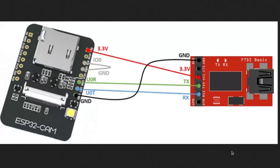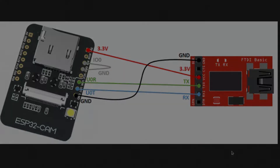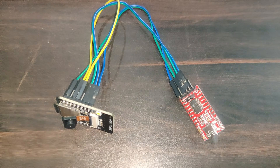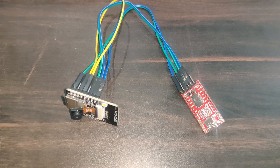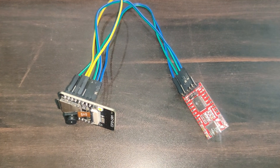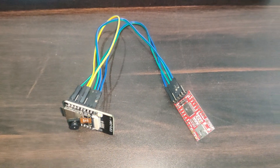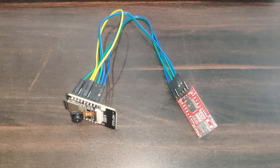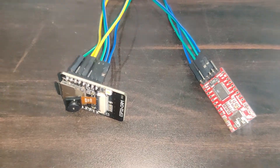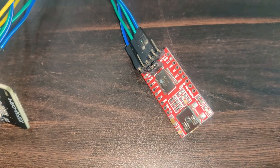Make the proper connection between the ESP32-CAM and the FTDI232 as shown in the pinout diagram. Once the connections are made, we can connect the FTDI232 to the computer via USB cable, which will allow us to upload the code from the system to the ESP32.